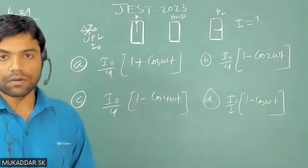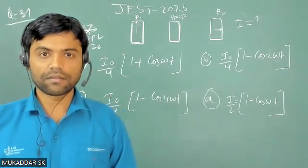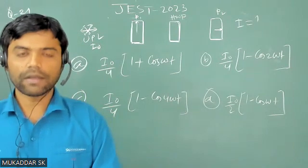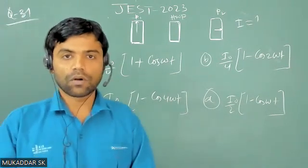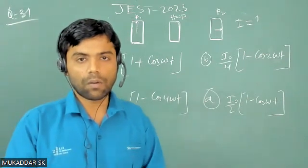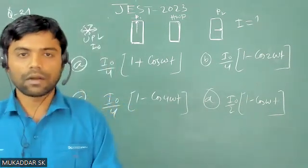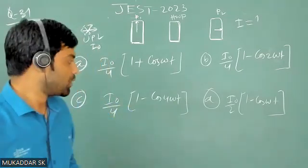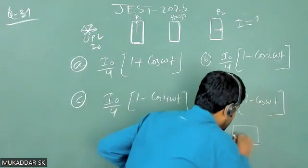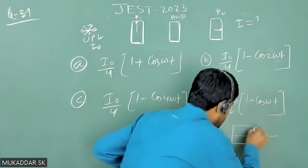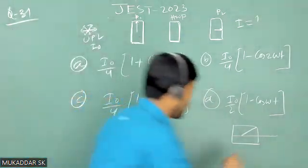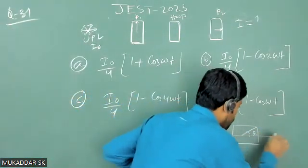Before solving this, let me clarify what is the fast axis. The fast axis is the direction in a double-refracting crystal in which the speed of the e-ray is maximum. If I take a positive crystal, then the fast axis is nothing but the optic axis of that crystal. Now, what is a double-refracting crystal? Suppose you have a double-refracting crystal — this is the optic axis — and suppose that linearly polarized light is incident at an angle theta with respect to the optic axis.